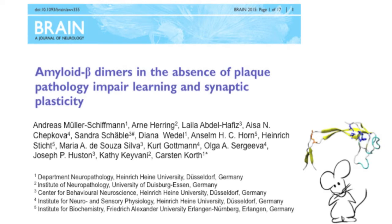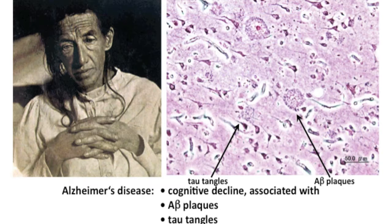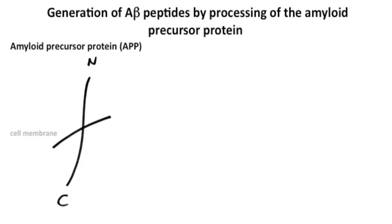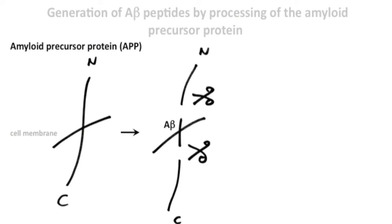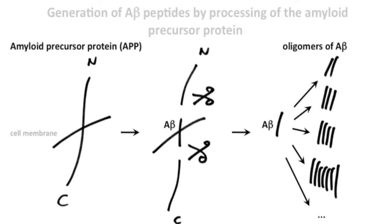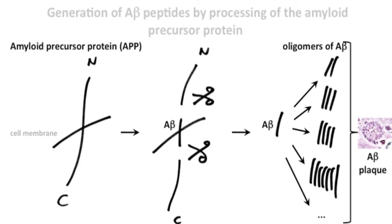Alzheimer's disease is the most prevalent neurodegenerative disease, characterized by cognitive decline and associated with extracellular plaques consisting of insoluble A-beta peptide, as well as intraneuronal tau tangles in the brain. The A-beta peptide is generated by processing of the amyloid precursor protein and immediately afterwards appears as multimers of various kinds.